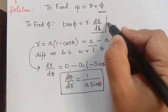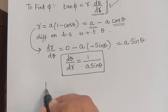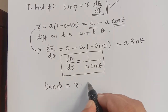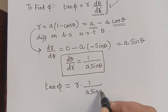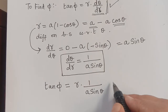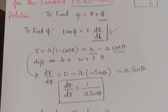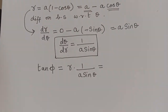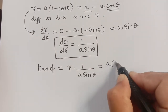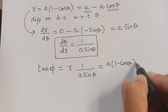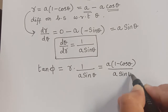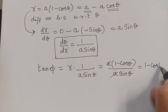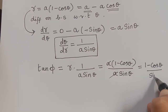Substituting into the formula: tan φ = r · (1/(a sin θ)). Since r = a(1 − cos θ), we get tan φ = a(1 − cos θ)/(a sin θ). The a's cancel, leaving tan φ = (1 − cos θ)/sin θ.